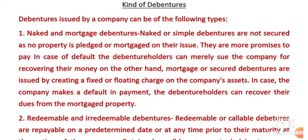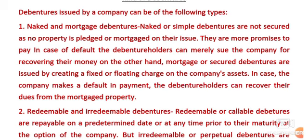The first kind of debenture is naked and mortgage debentures. Naked means the debentures which are not secured — unsecured. In debentures, there will be an issue of security; there will be an asset that is mortgaged. Some asset is given as security, or if the company pledges anything, those are our mortgage debentures. But some debentures are those where there is no need to keep anything as security.